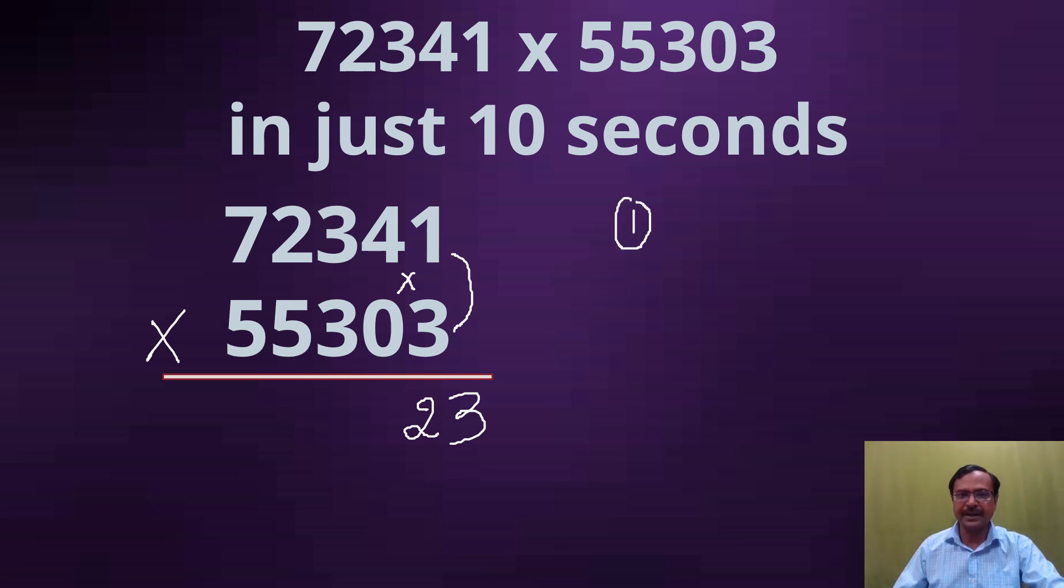Next step: 3×3 are 9, 1×3 are 3, that is 12 again, and this is 0. So 12 plus 1 is 13. So 3 and a 1 carry again.